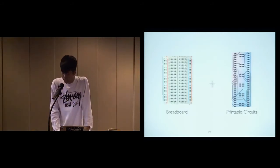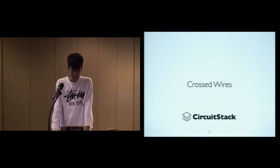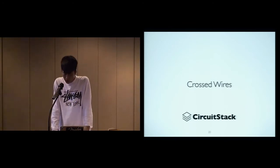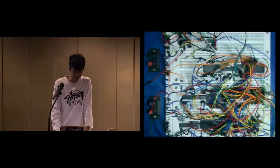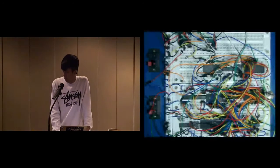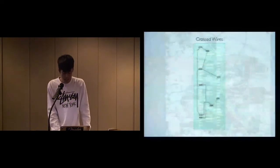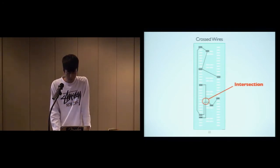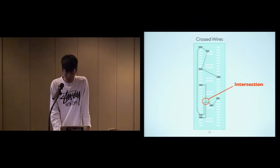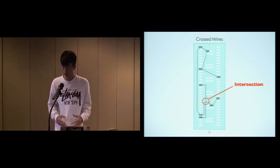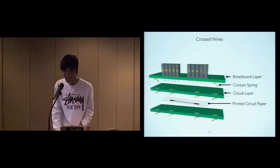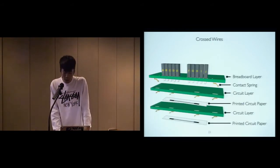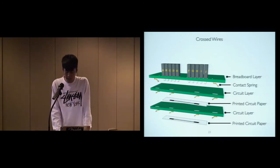Another challenge is the cross wires on the printed circuit paper. When the circuit grows more complex, the routes on the printed circuit paper may intersect each other, which leads to short circuits. So how do we tackle this? If we can't do it in 2D, just go to 3D. So we come up with a multi-layer structure to stack more printed circuits.